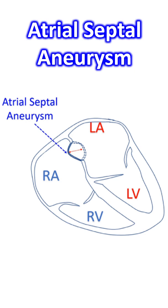We have to look for atrial septal aneurysm in each case of cryptogenic stroke, preferably by transesophageal echocardiogram. Saline bubble contrast echocardiography should be used to check right-to-left shunt across a patent foramen ovale.